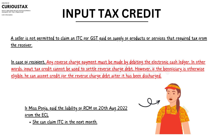The reverse charge payment must be made only from the electronic cash ledger. In GST, there are three ledgers: the electronic cash ledger, the electronic credit ledger, and the electronic liability ledger. Essentially, these are e-wallets in the GST portal where you can claim, set off, or debit amounts.